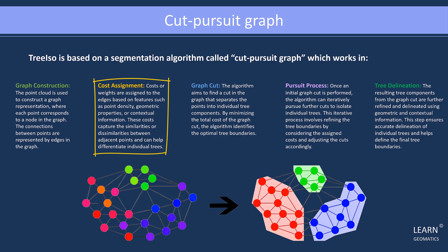Next, costs or weights are assigned to the edges based on features such as point density, geometric properties, or contextual information. These costs capture the similarities or dissimilarities between adjacent points, aiding in the differentiation of individual trees.